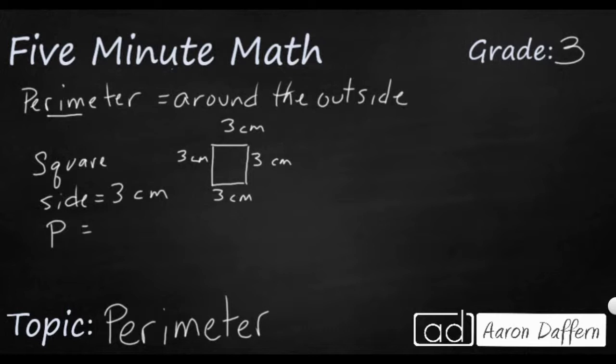or we can do three times four. And that's going to get us 12. So even though they only gave us one measurement, we can find the perimeter of a square.